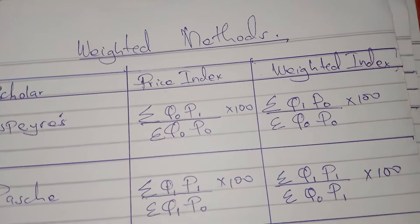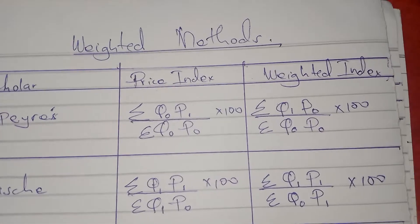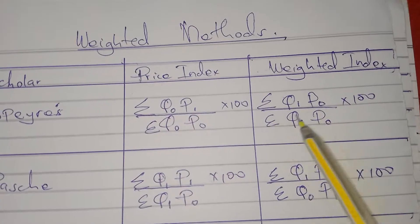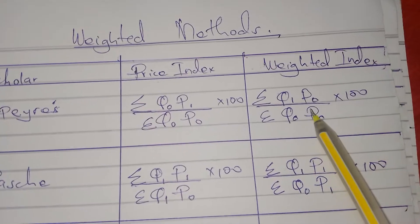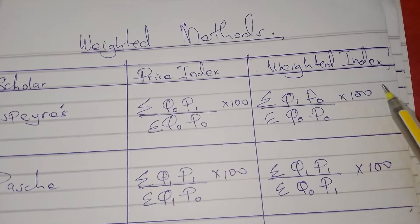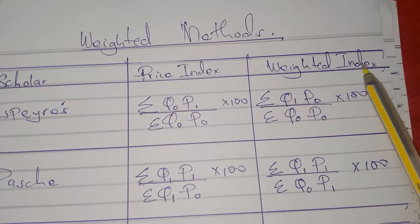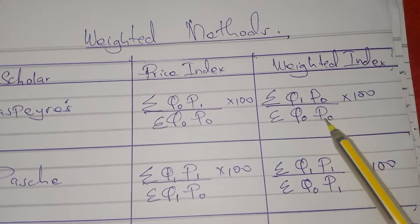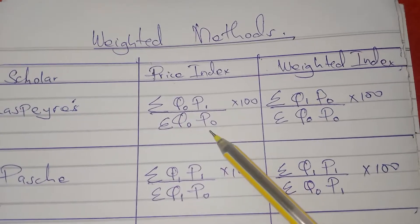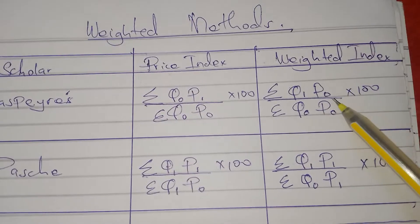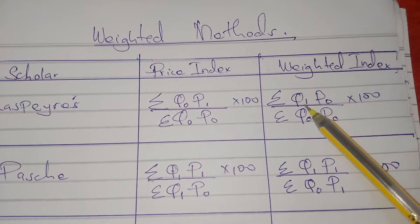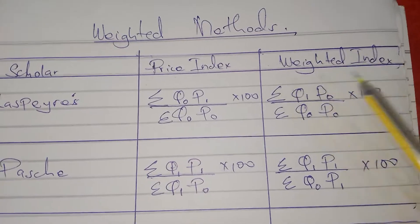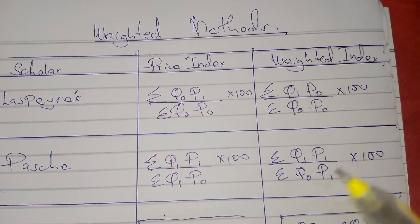For the Spayless weighted index, the formula is: summation of q1 times p-naught, divided by summation of q-naught times p-naught, times 100. Since Spayless concentrates more on the base year, and the weighted index is about quantity, here quantity is changing but price is constant. Quantity changes from q-naught to q1, and prices are constant at p-naught, p-naught. That is the weighted index according to Spayless.